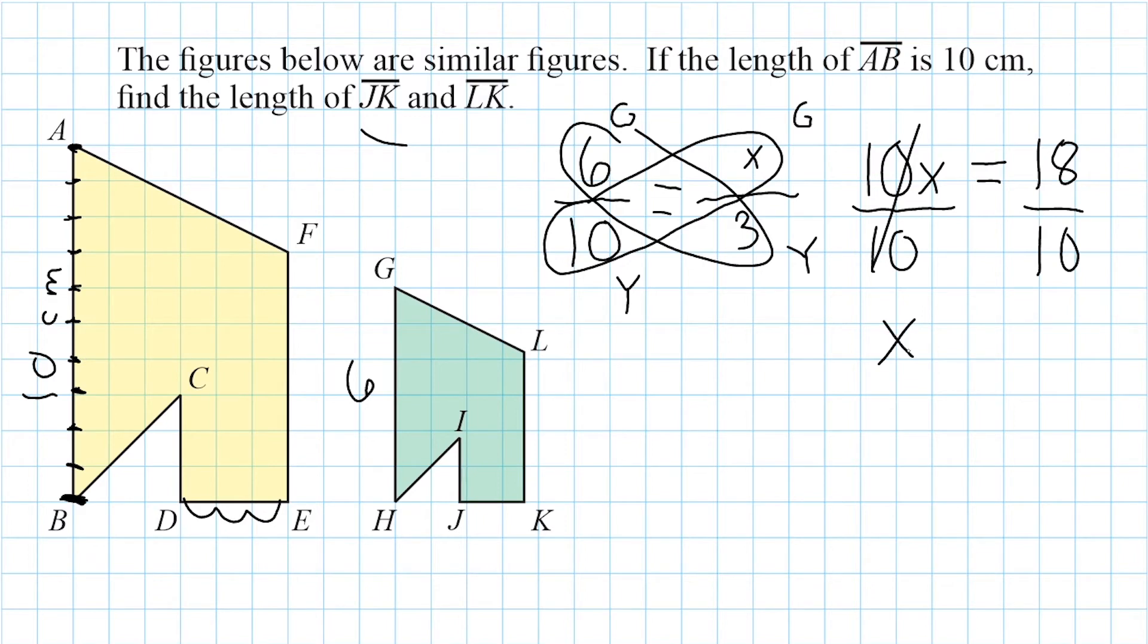Now I could quickly reduce this fraction, which would be 9 fifths. And then I could express that as a mixed number, which would be 1 and 4 fifths. Or what we could do is we could express this as a decimal. And 1 and 4 fifths is equal to 1.8. So the distance of line segment JK down here is 1.8.